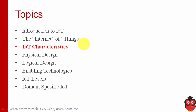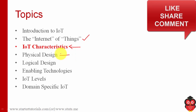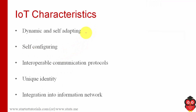Hello everyone. In the last session we covered the definition of Internet of Things and some basics of networking. Today we are going to look at IoT characteristics and some things in the physical design of IoT. These are the five IoT characteristics: dynamic and self-adopting, self-configuring, interoperable communication protocols, unique identity, and integration into information network.